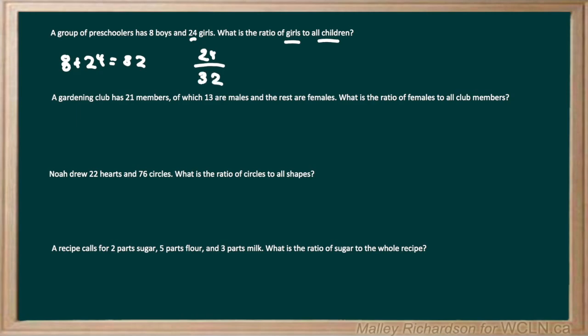So our part-to-whole ratio is 24 over 32, but this can be reduced down if you divide the top and the bottom by 8. 24 divided by 8 is 3, and 32 divided by 8 is 4, so the reduced part-to-whole ratio is 3 over 4.